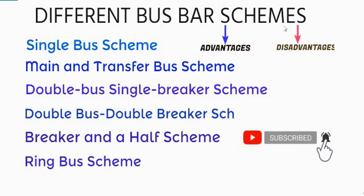Assalamu alaikum, my name is Muhammad Binal Malik. Today we are going to discuss different bus bar schemes with their advantages and disadvantages. These are: single bus scheme, main and transport bus scheme, double bus single breaker scheme, double bus double breaker scheme, breaker and half scheme, and ring bus scheme. Let's start the video without wasting time.